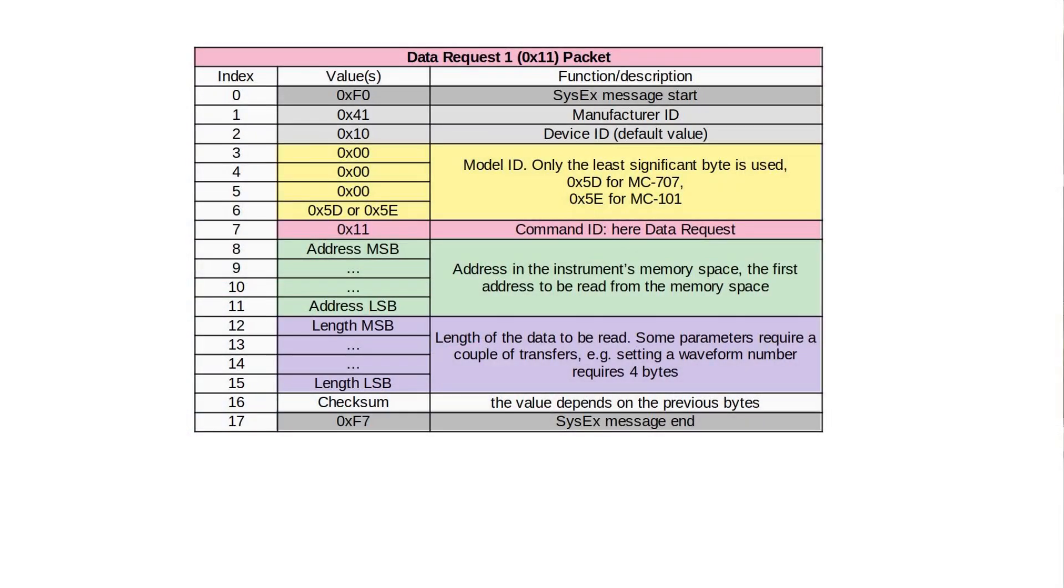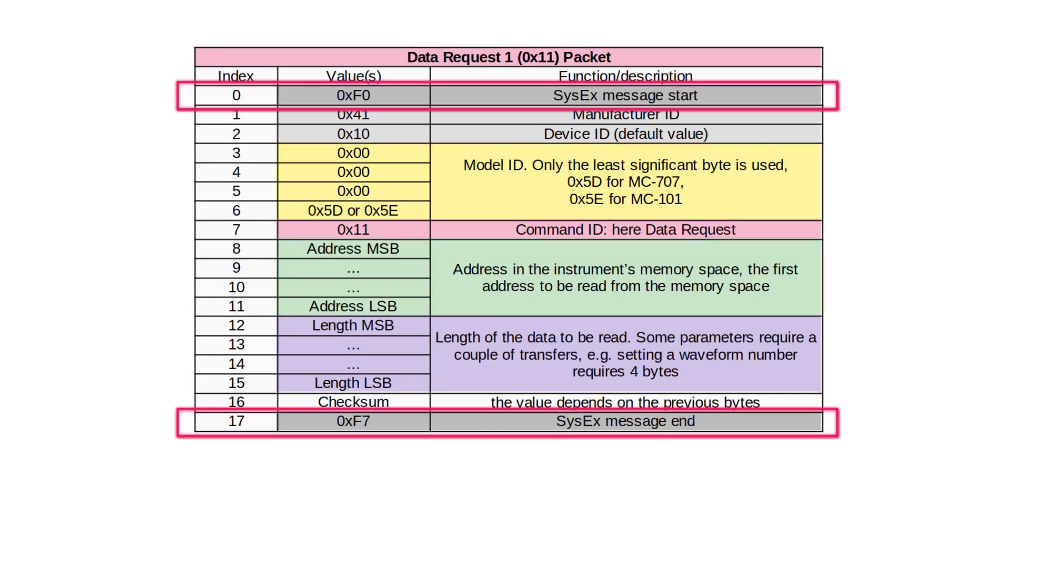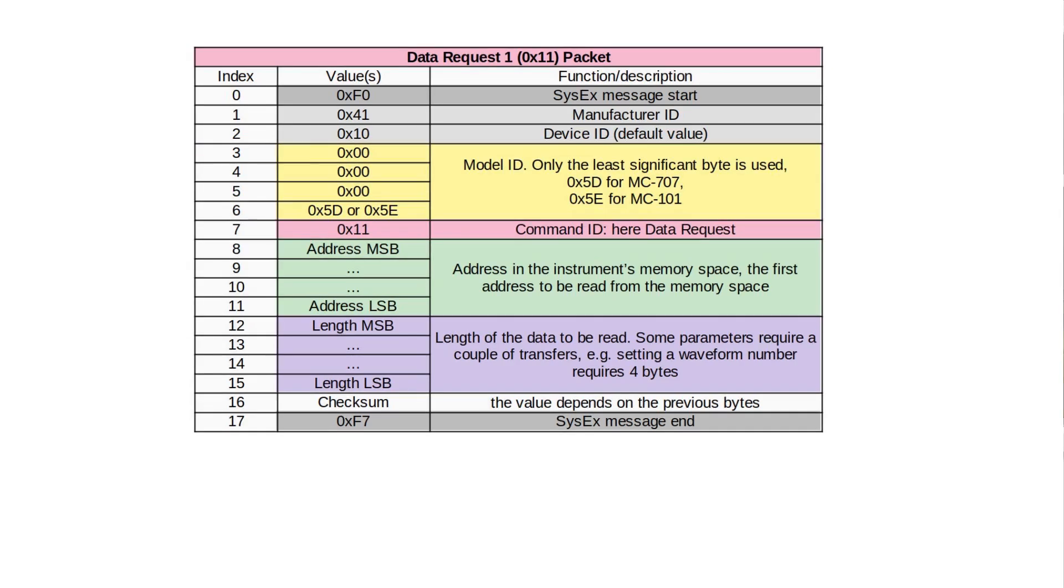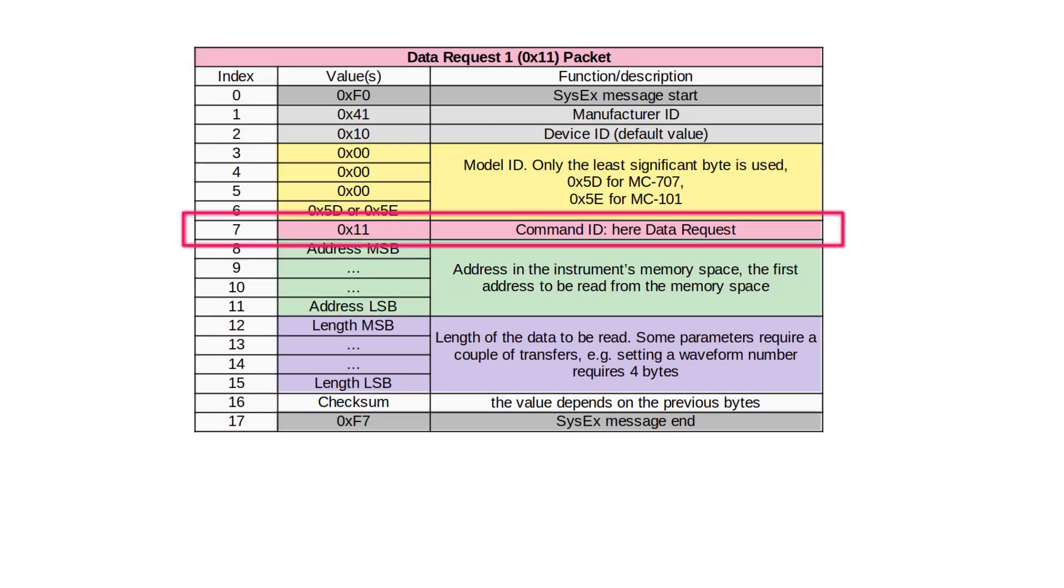The DT1 message is also the response message to the DataRequest message. Fortunately, Roland MC-101 and MC-707 use these messages too. And you can find information about them in Roland's MIDI implementation charts of a few other instruments. This diagram shows the system-exclusive message for requesting data from a Roland instrument that supports the SysX communication. It is basically a SysX message but with a specific data structure inside it. We need to provide the model identification number in the message in bytes 3 to 6. It's just a series of numbers. Three zero bytes and 5D or 5E hexadecimal whether we communicate with MC-707 or MC-101.